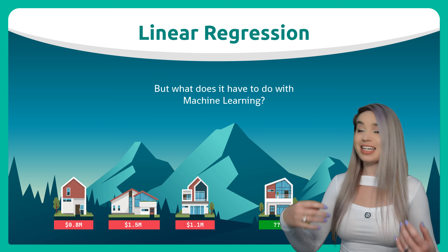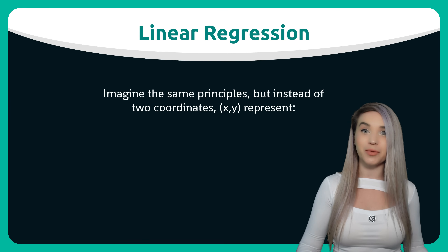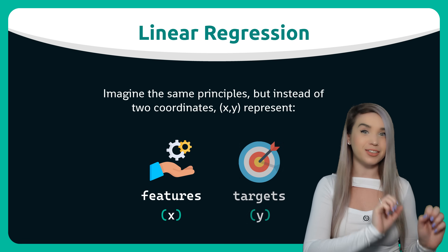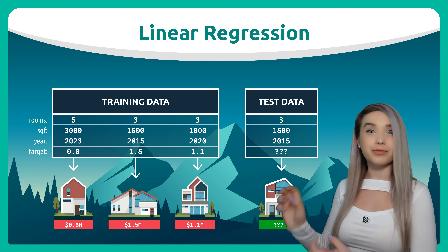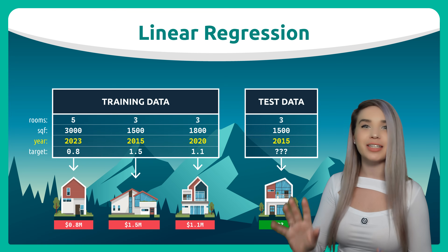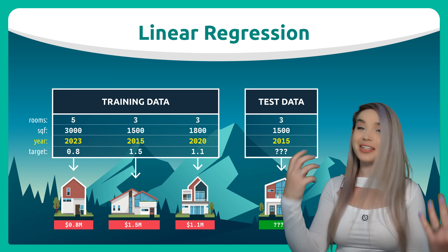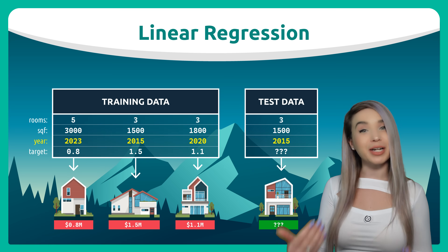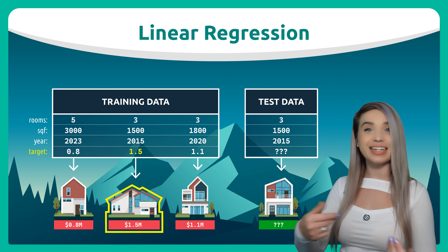So instead of dealing with x and y data points, we are actually dealing with features and targets. The features could be the number of rooms, the square footage, the year in which the house was built, and so on. While the targets could be the value of the house — for example, 1.5 million Canadian dollars.